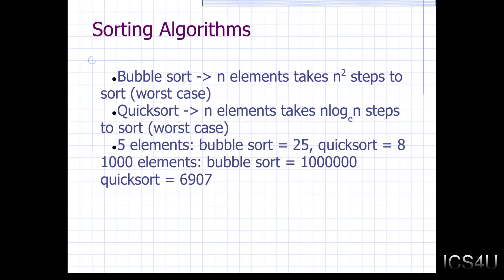So, and let's take a look at the last point because this really drives the point home. With five elements, bubble sort takes 25 steps. Quick sort takes eight steps. So you might say, well, who cares? It doesn't matter. Bubble sort takes a few more steps. It takes 25 instead of eight. We'll never notice that. And you're right.